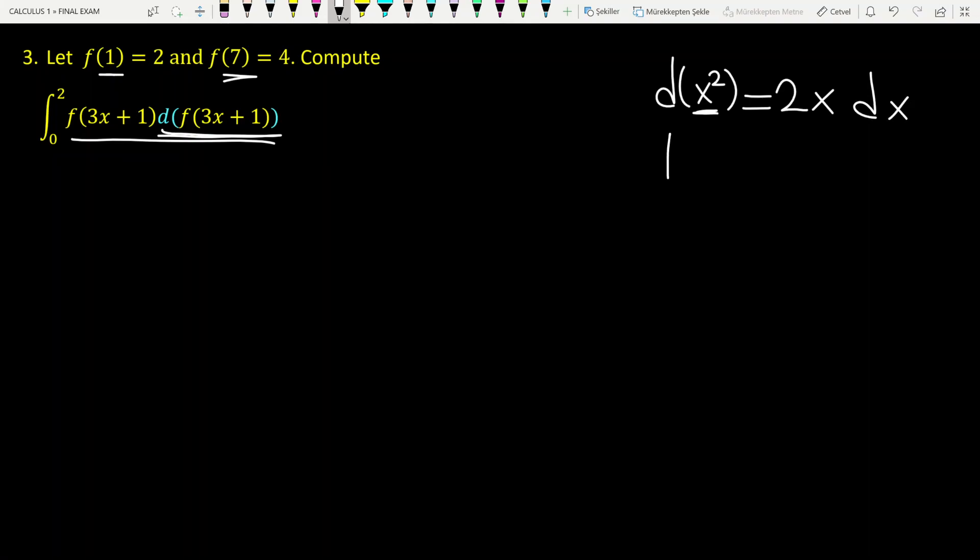Let me slightly change the function. Instead of x squared, let's have lnx. So in this case, you take derivative of inside, which is 1 over x, times dx.